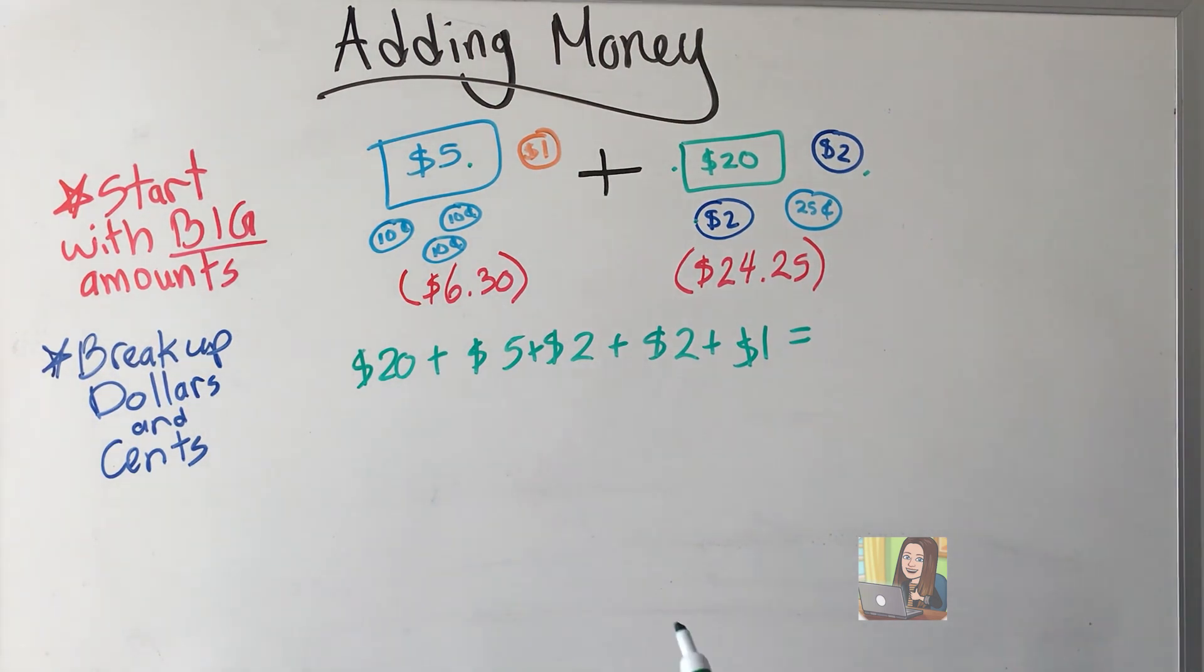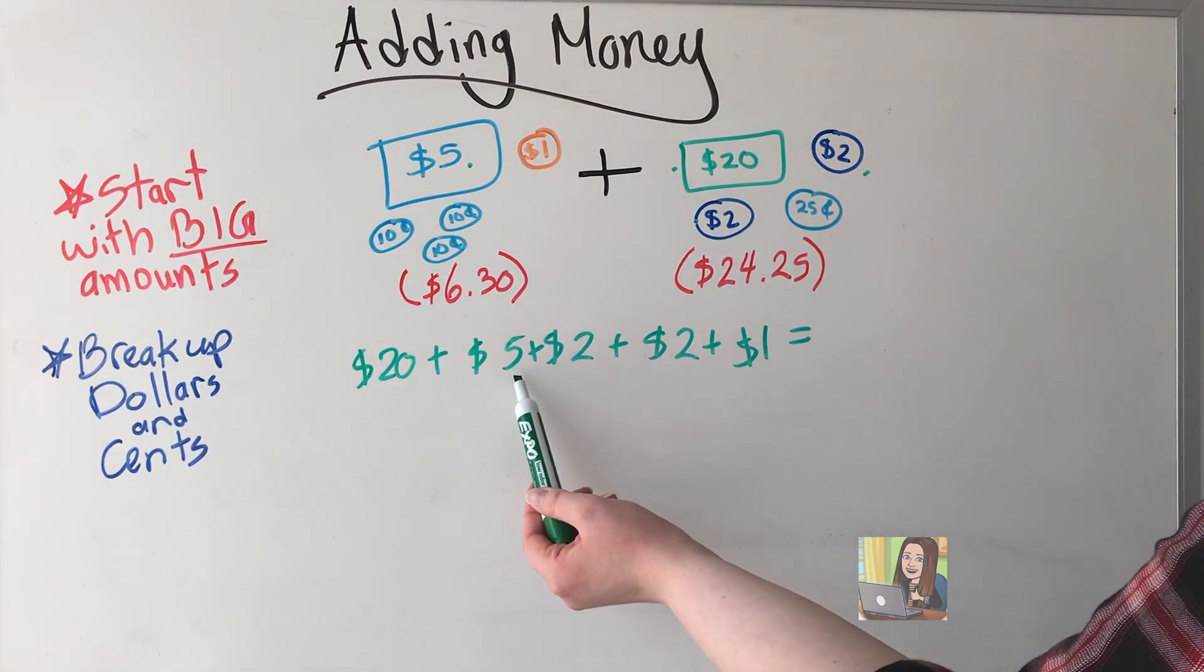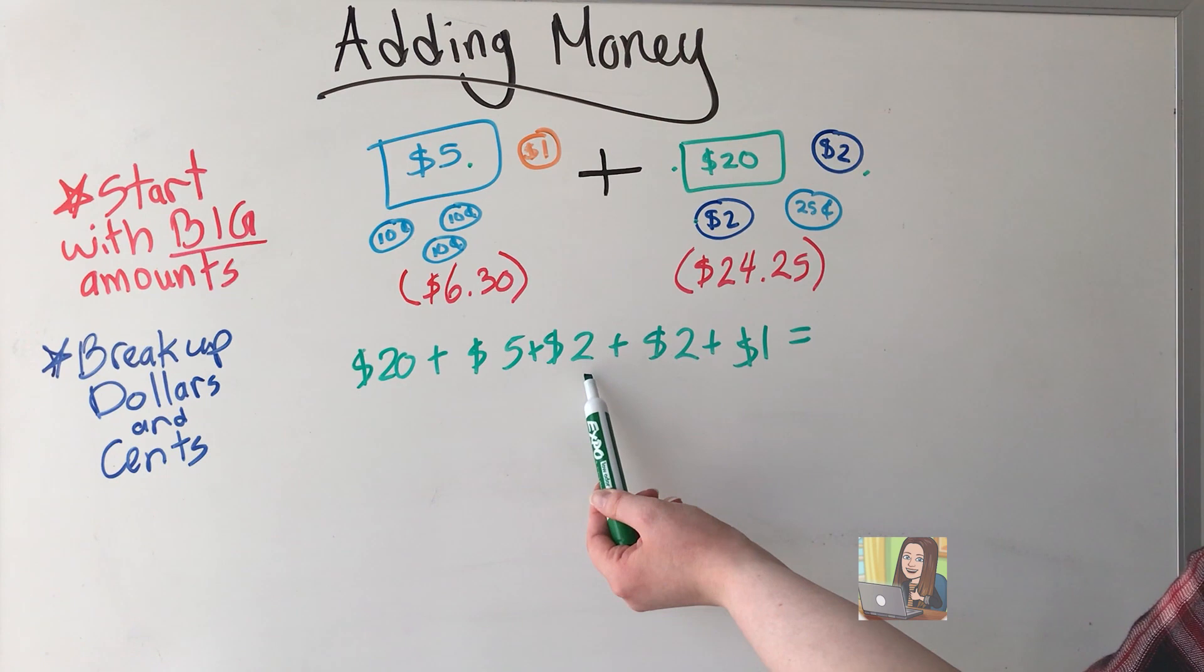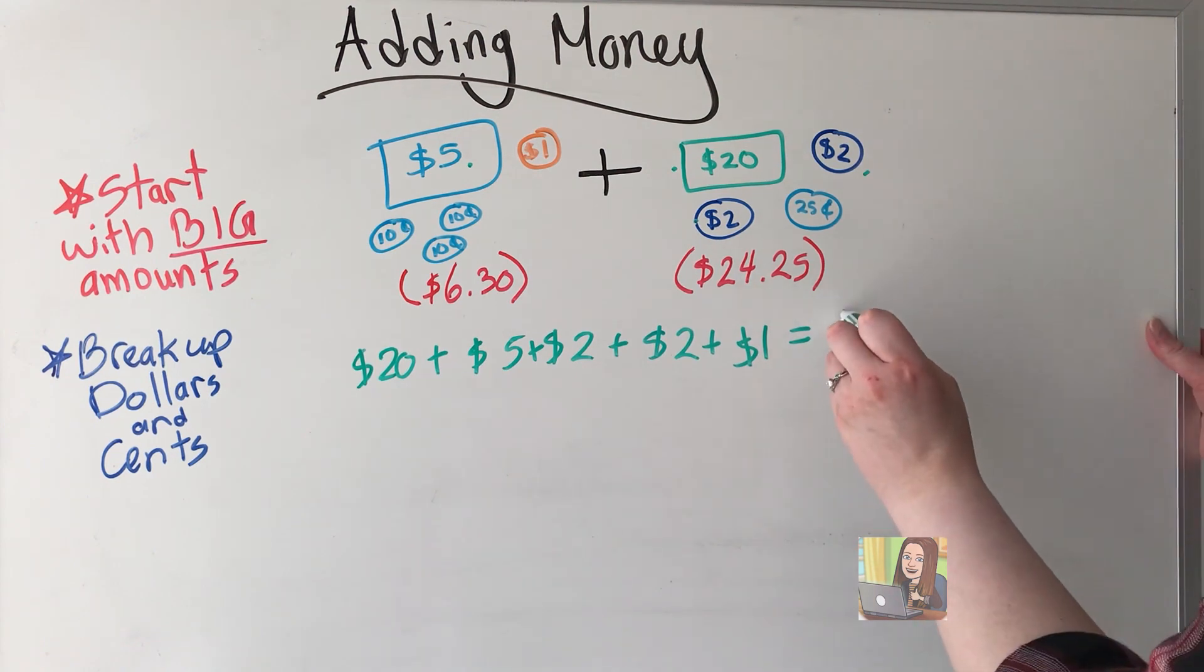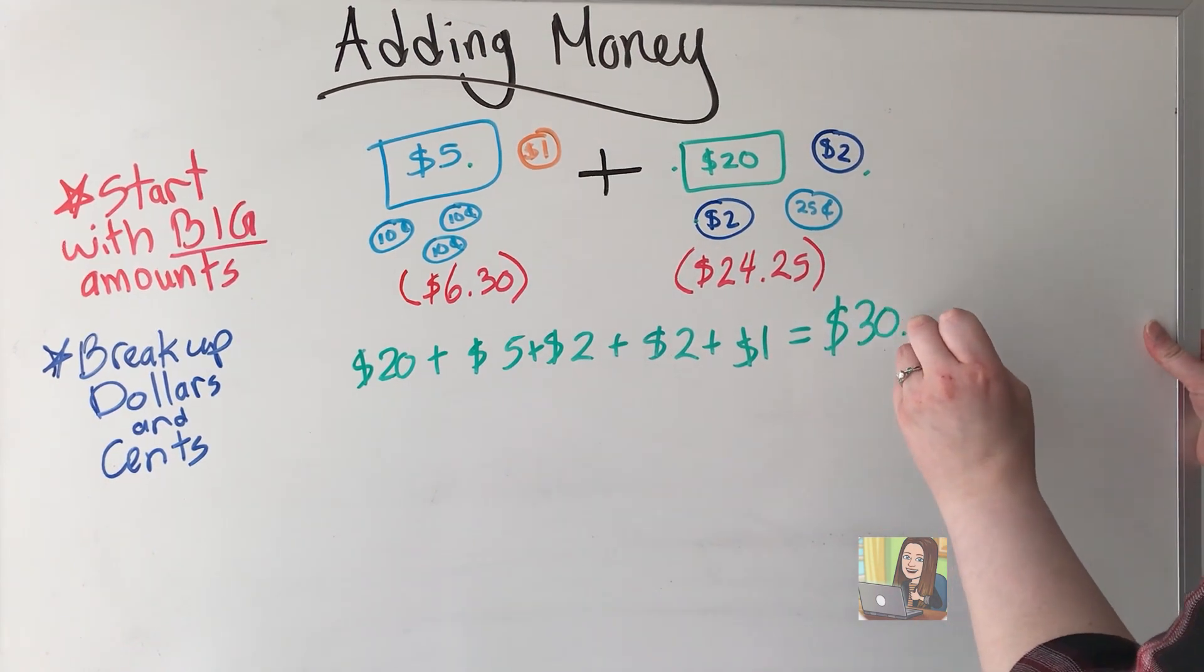Let's add this up. 20 plus 5, 25 plus 2, 27 plus 2, 29 plus 1 gives me $30.